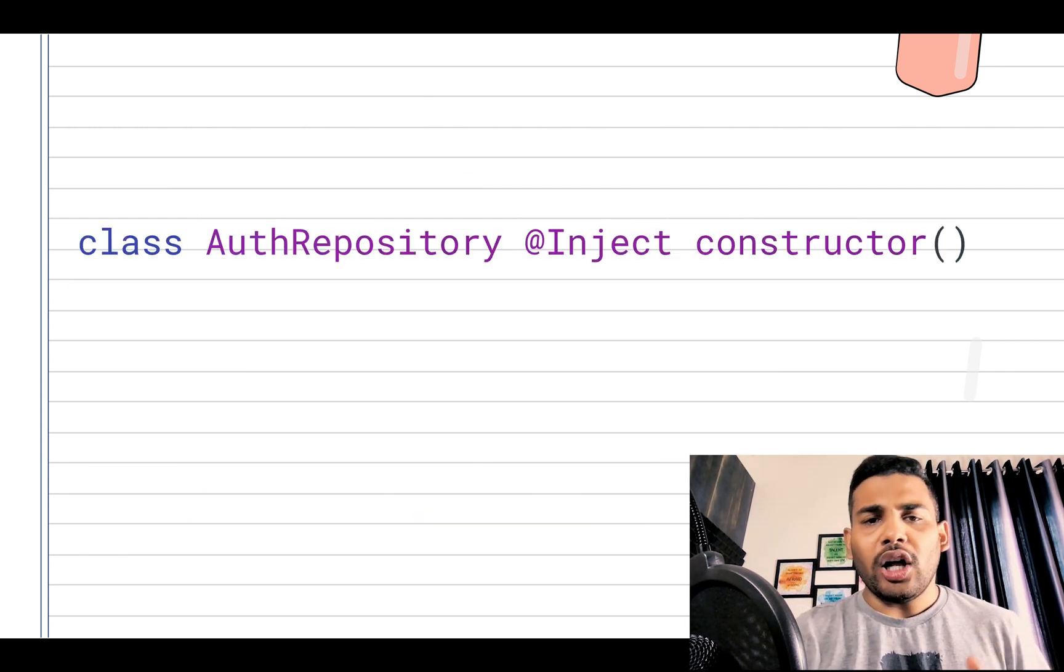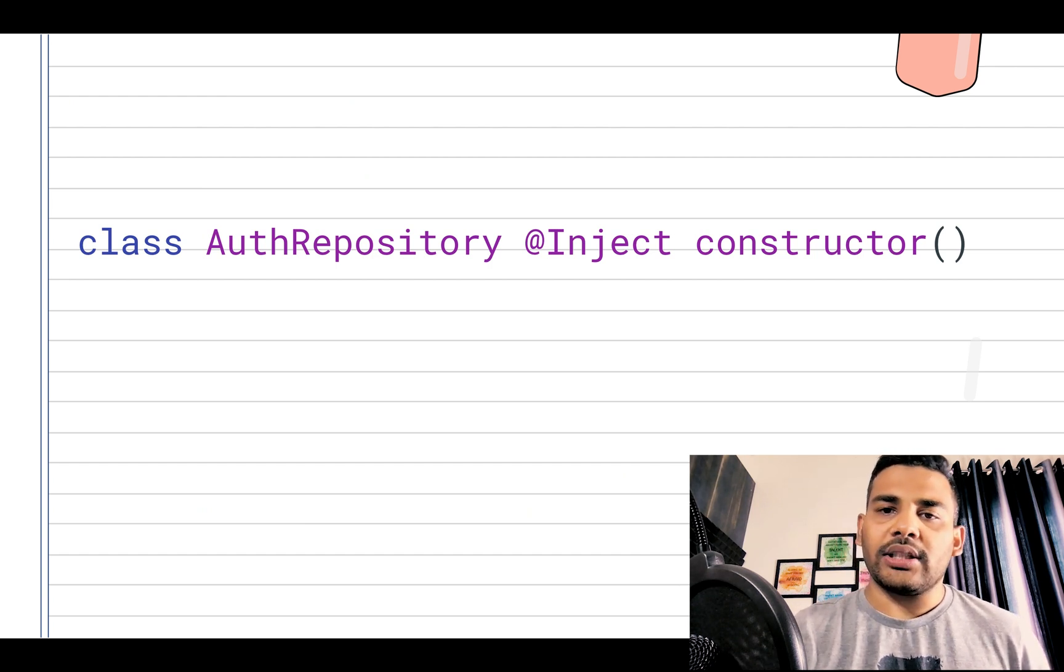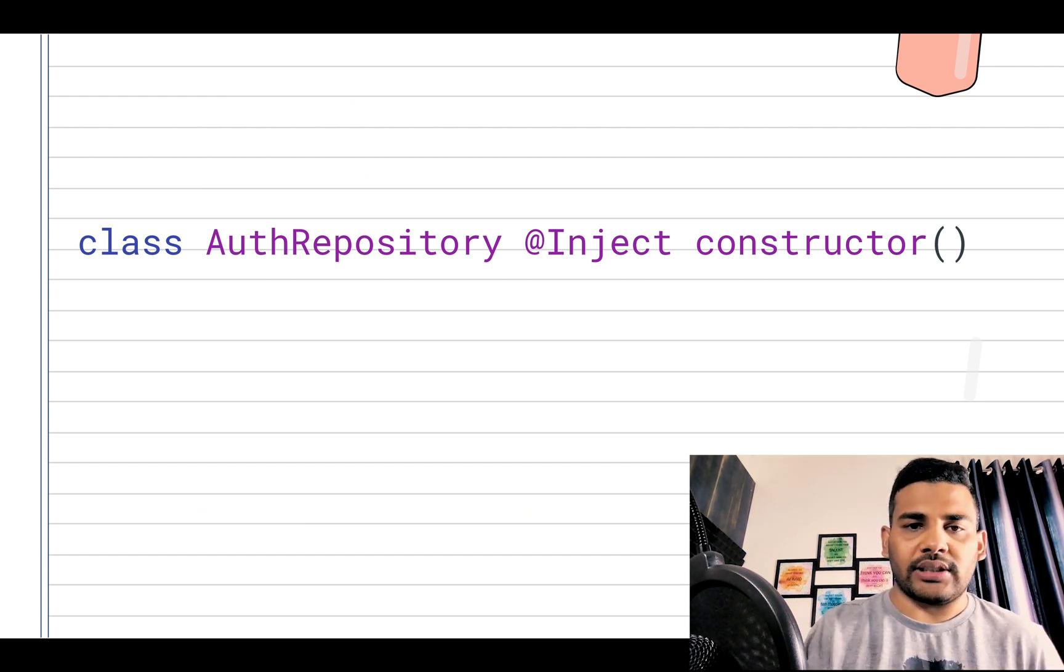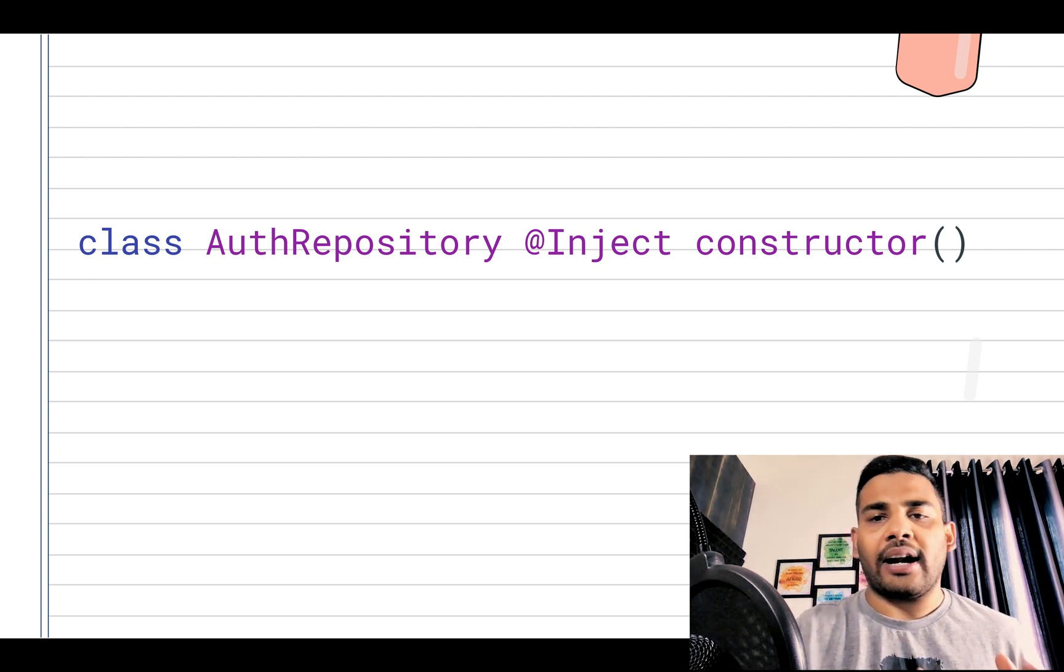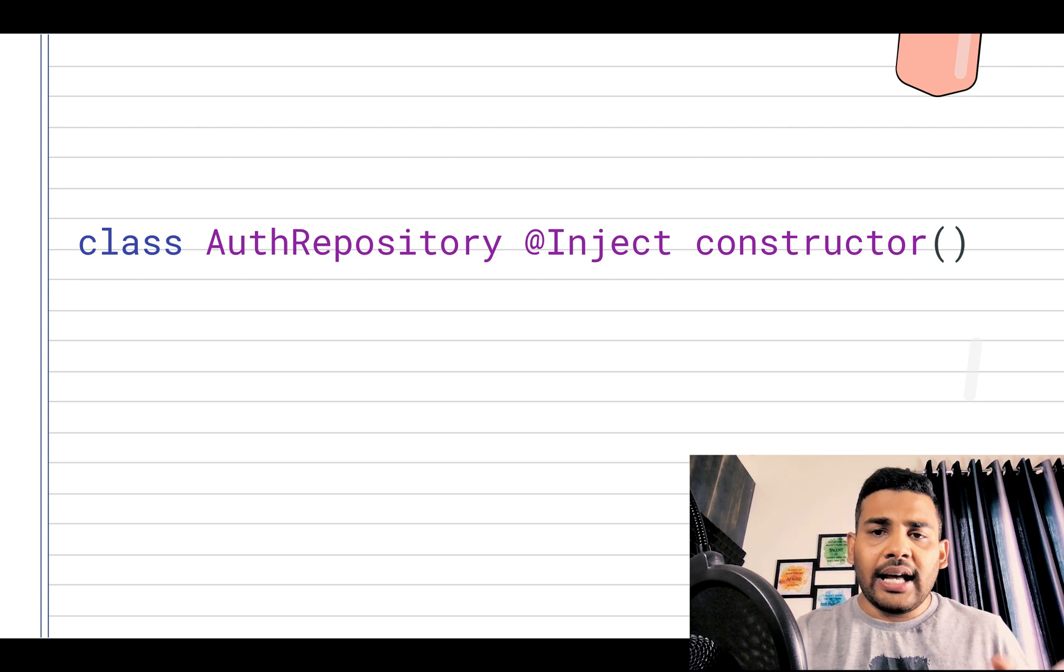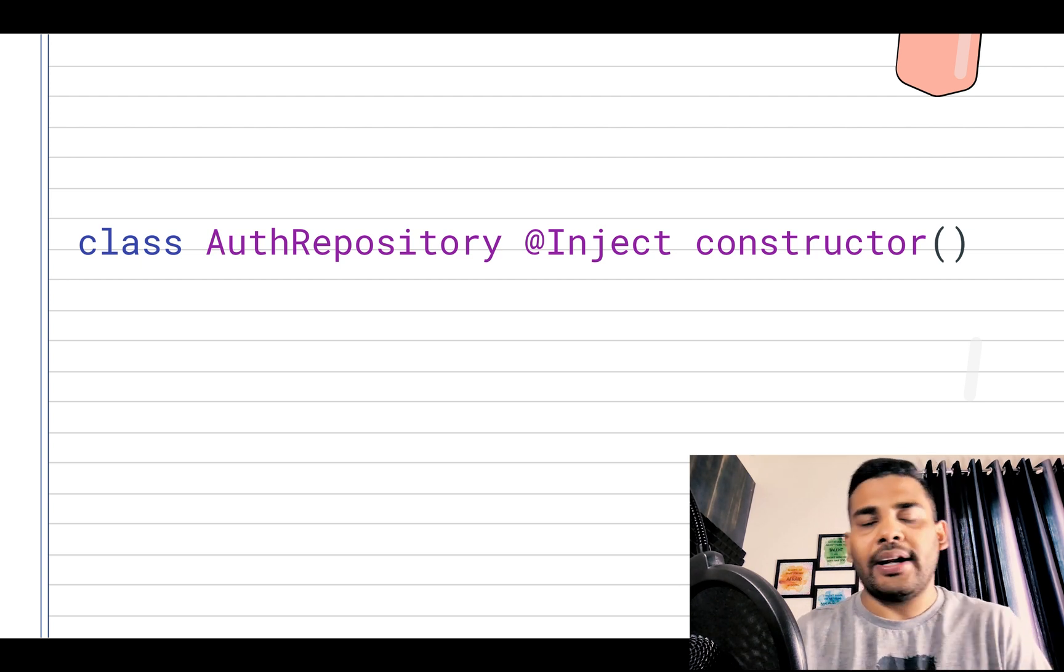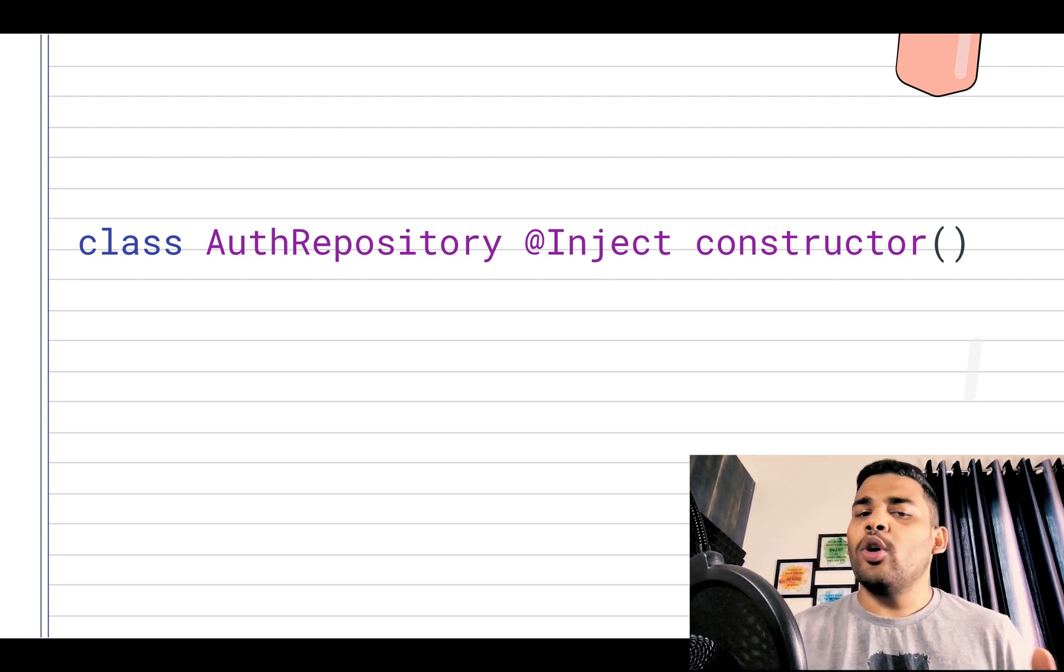But again, the AuthViewModel requires AuthRepository and Dagger does not know how to build AuthRepository. That is why again we need to tell Dagger with the help of @Inject annotation that you have to build this dependency as well. I hope you got the point.